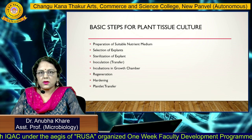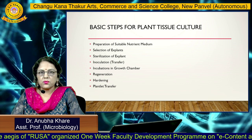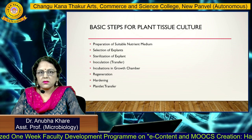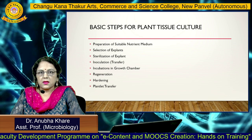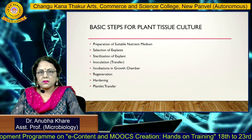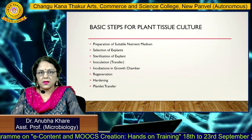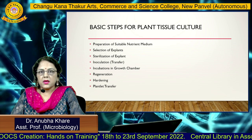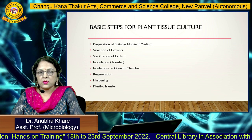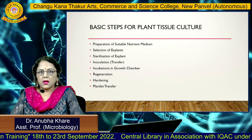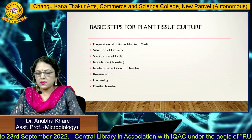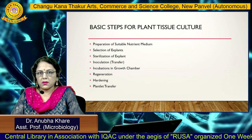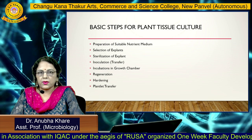The basic steps involved in plant tissue culture are: first, preparation of a suitable nutrient medium, which must be prepared with all ingredients, autoclaved, and sterilized. The next step is selection of the explant — the excised part of root tip, shoot tip, leaves, anther, pollen, or apical meristem — which must be completely sterilized using different sterilizing agents. The next step is inoculation or transfer of the explant into the medium, either in a flask or test tube.